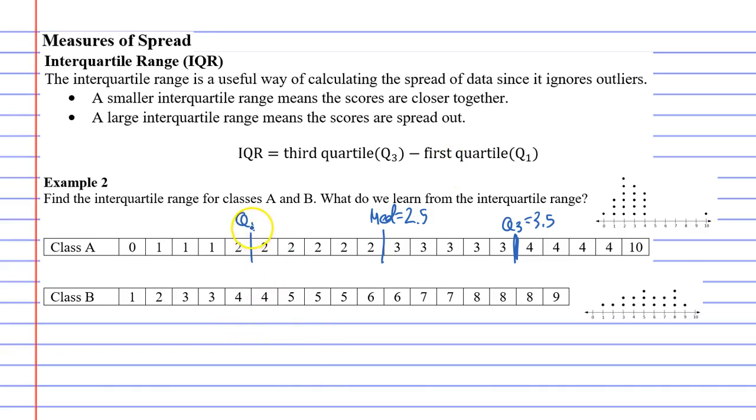And basically we've found the quartile marks, and this is what we use to calculate interquartile range. So our interquartile range for class A is 3.5 minus 2, which is 1.5.